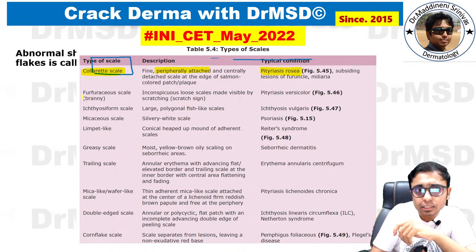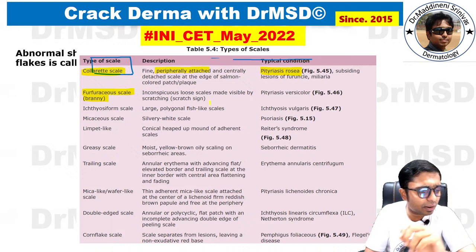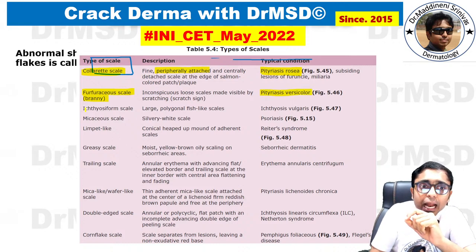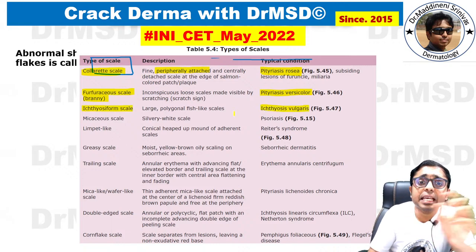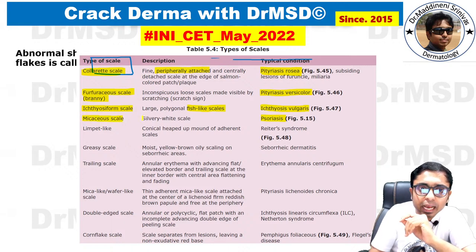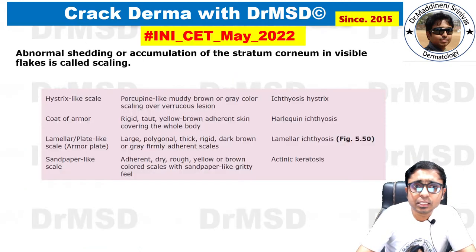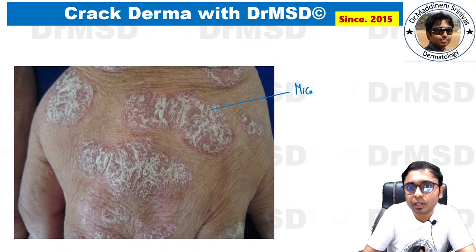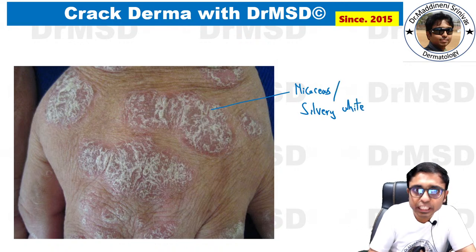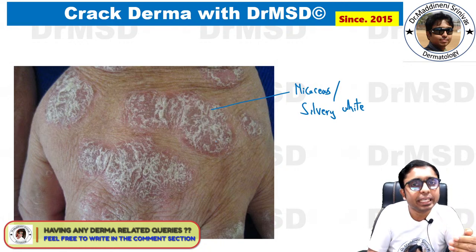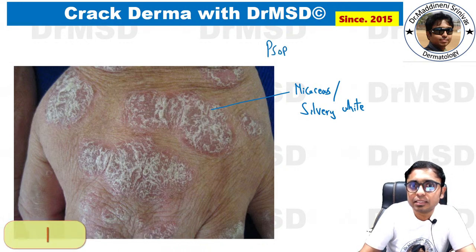The collarette scale is attached at the periphery of this annular lesion, while the central part has no scale attached. Coming to other scales: branny or pityriasiform scales are seen in Pityriasis versicolor, caused by Malassezia furfur. Ichthyosiform scale is seen in Ichthyosis vulgaris — fish-like scales. In Psoriasis, micaceous or silvery white scales are seen over well-defined erythematous to salmon-pink plaques.